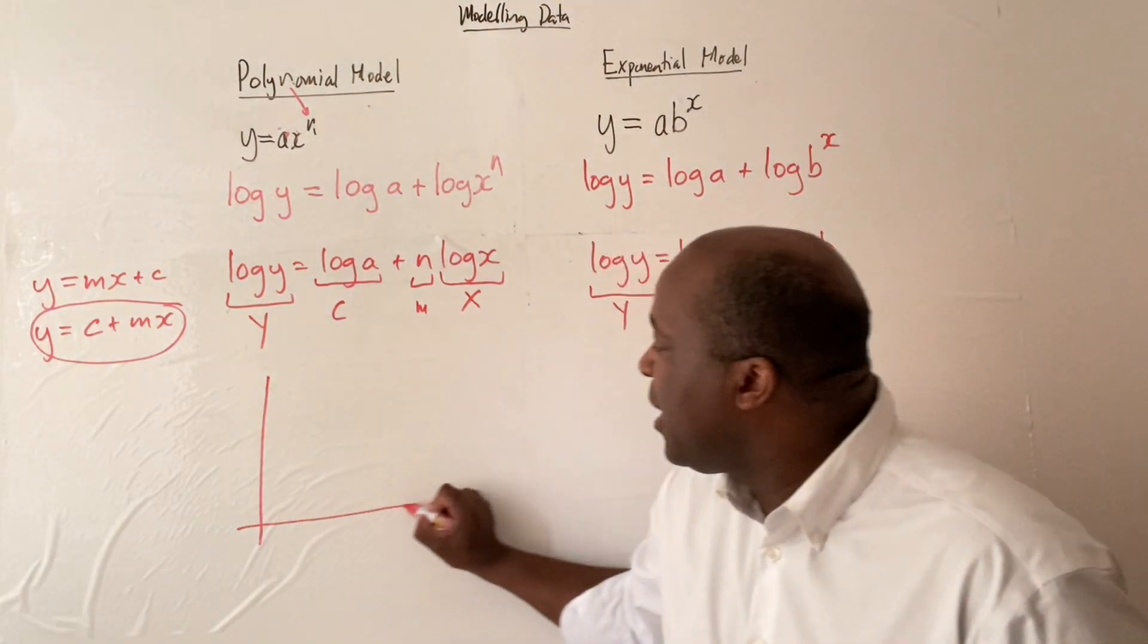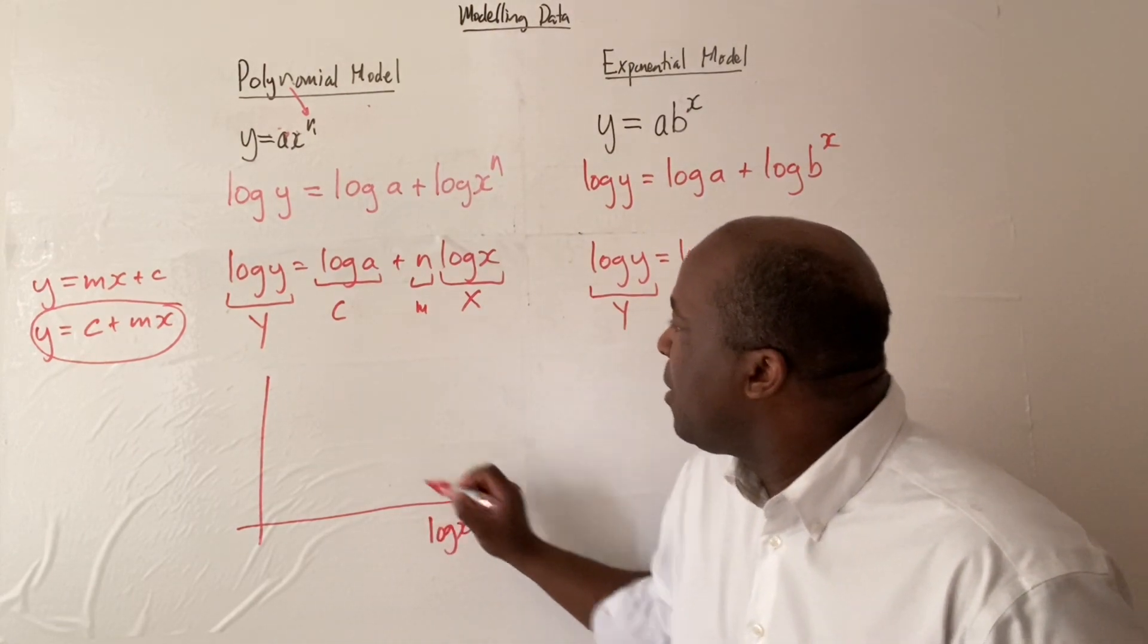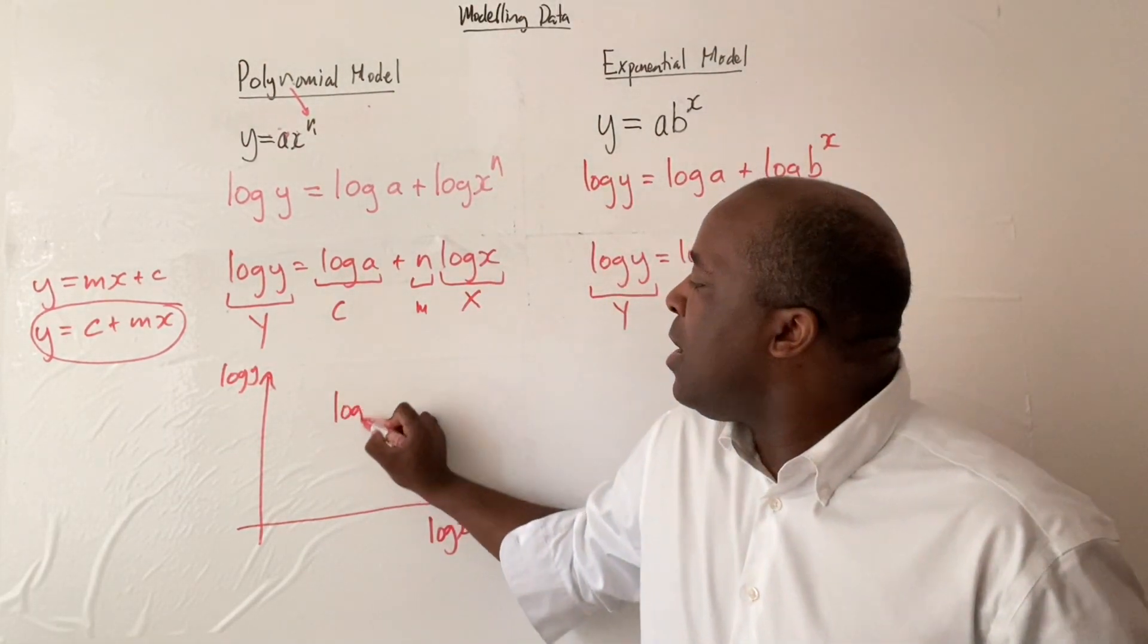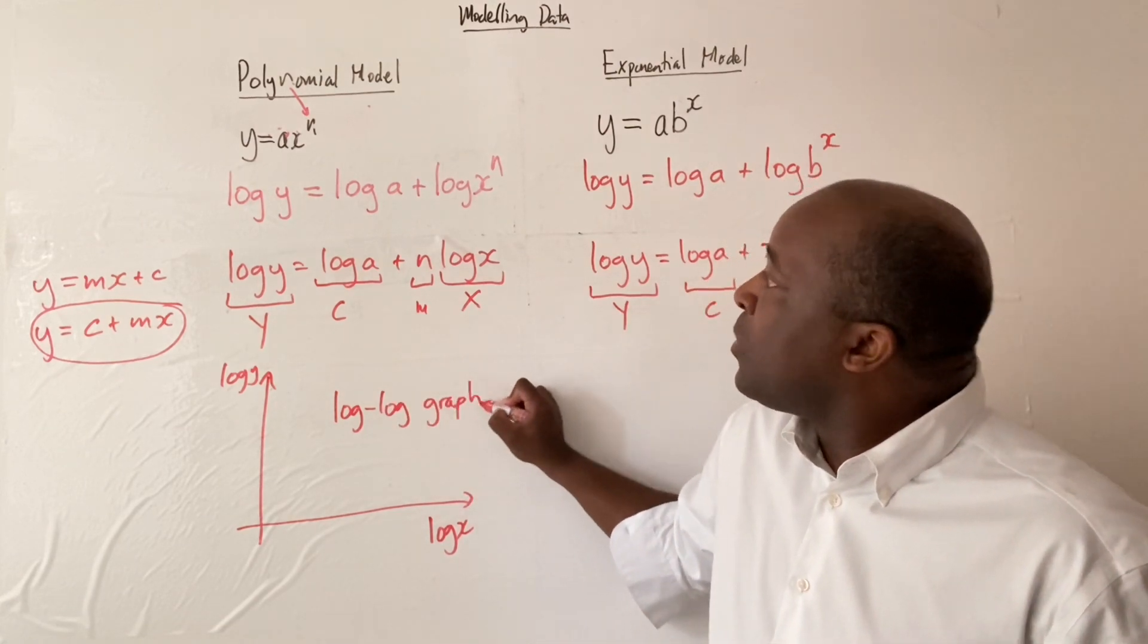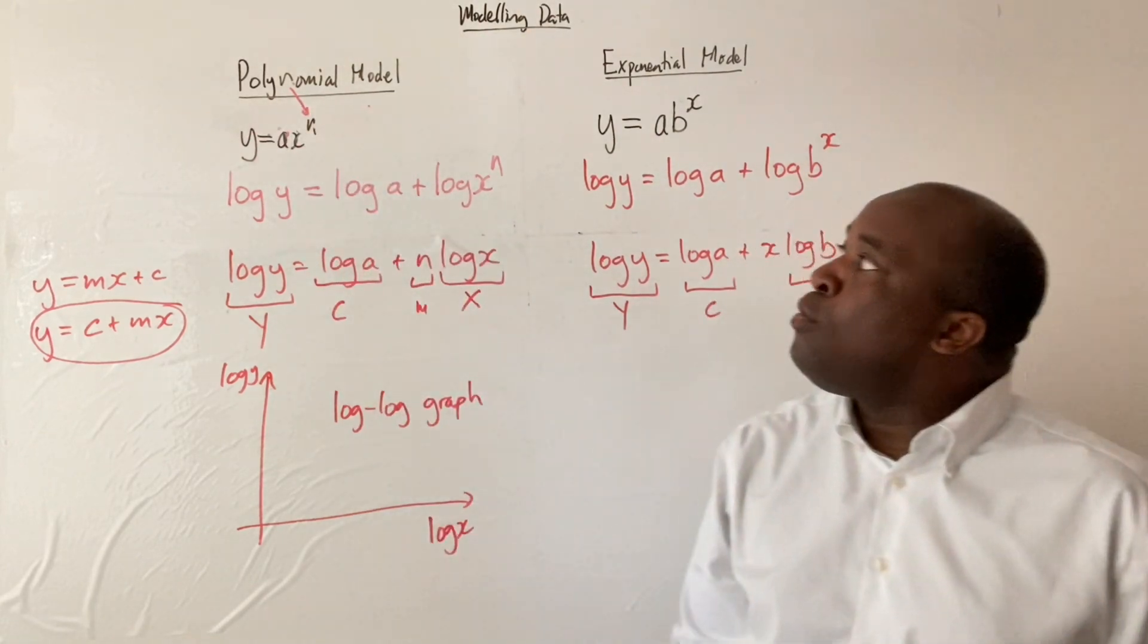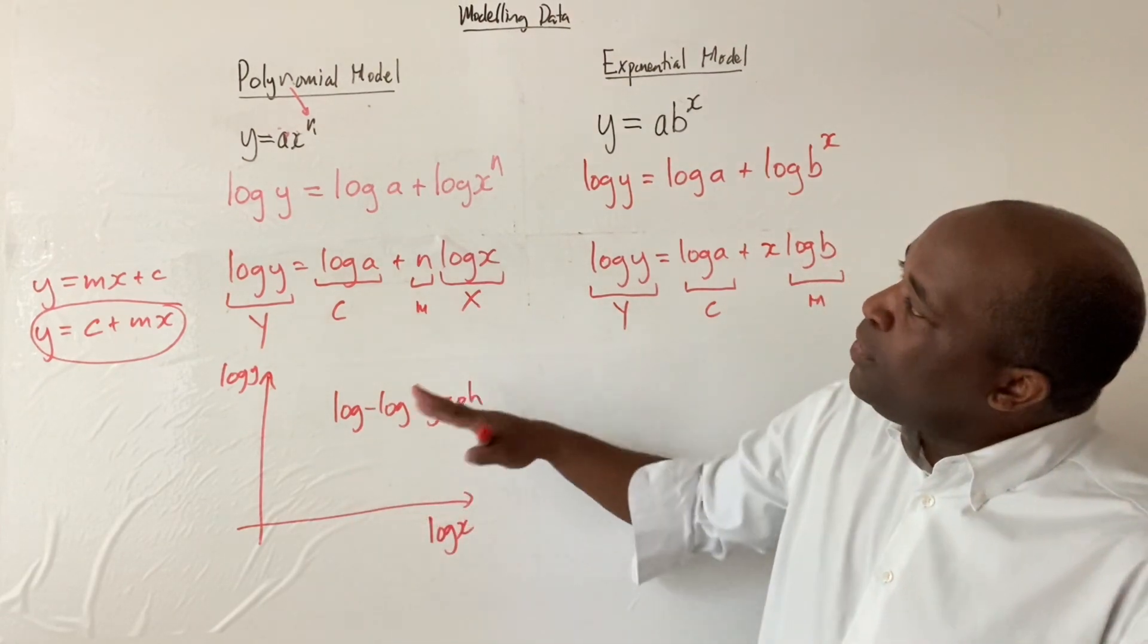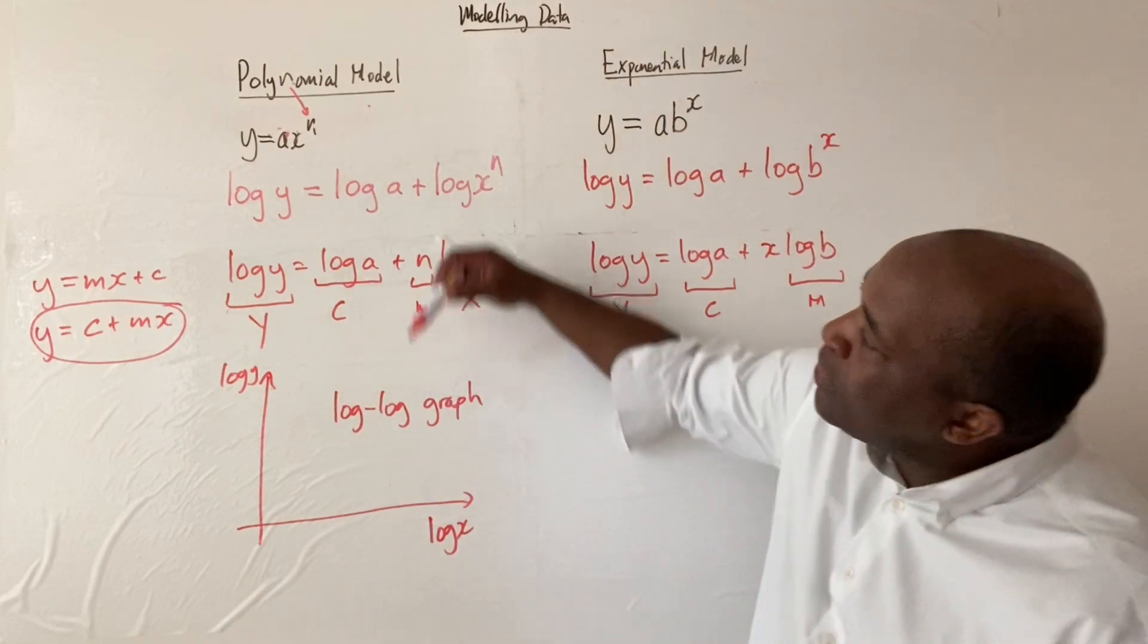When we graph these, what we have here, we would have log x here, and we would have log y. This would be called a log-log graph. A log-log graph corresponds to the polynomial model. So whenever you see a log-log graph, then you know it's the polynomial model that needs to be invoked.